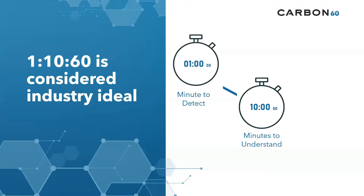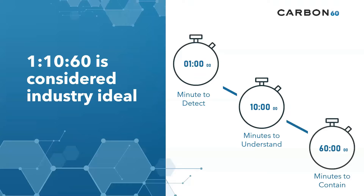The third pillar is 60 minutes to contain. With detection and investigation already taking time — and in many cases too long — 60 minutes is the ideal time to contain a threat once access is gained. Statistically, industry analysts note that on average it takes many smaller organizations up to 31 hours to contain intruders once they get access to a network.